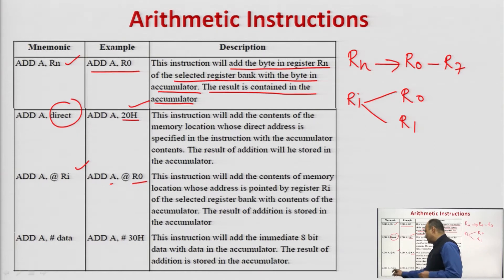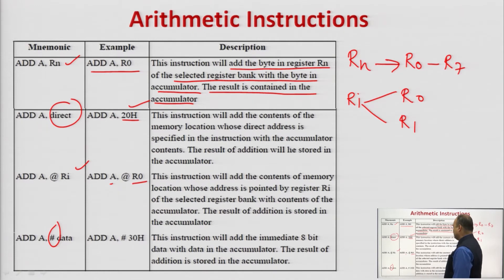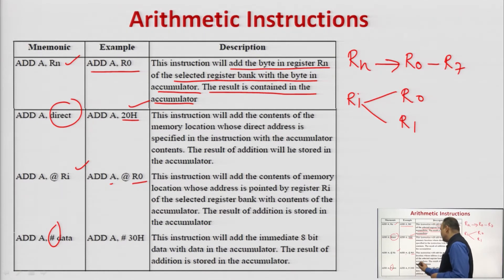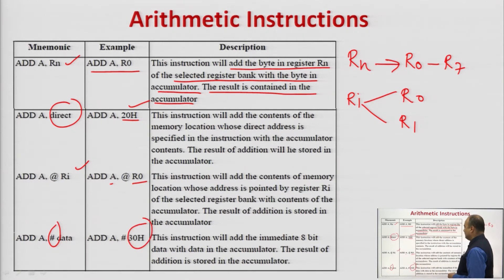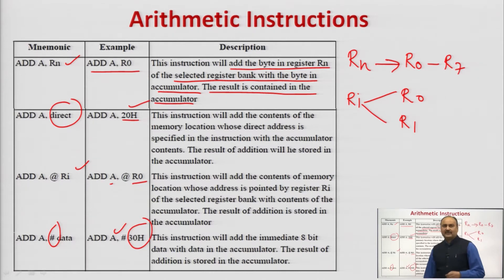Next is ADD A, #data. The '#' (pound) sign indicates the immediate addressing mode. The immediate data — for example, 30h — is an 8-bit value specified with the instruction. Whenever the microcontroller executes this instruction, it adds this immediate data with the content of the accumulator and stores the result into the accumulator. These are the various forms of the arithmetic ADD instruction.